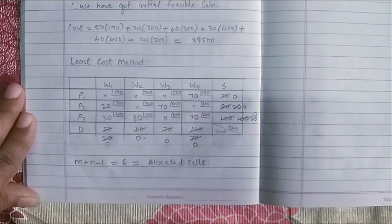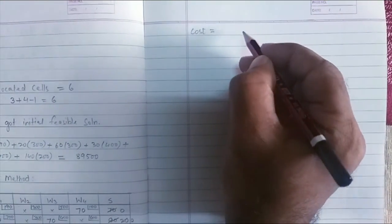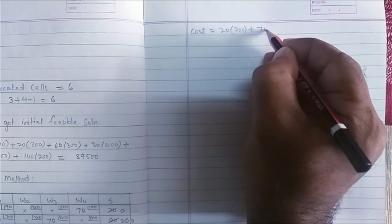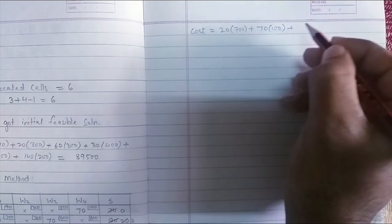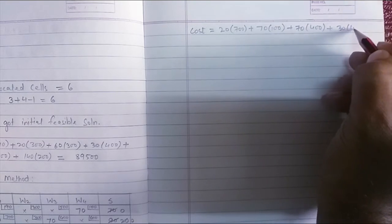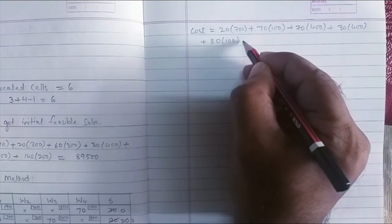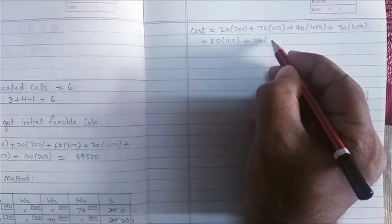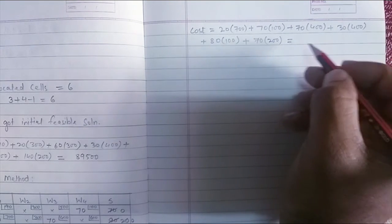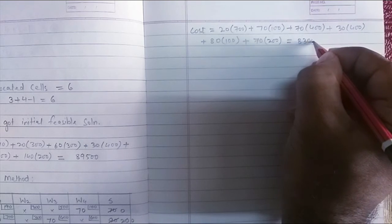Now, let us do the calculation and find the total cost. I'll just put the cost here. Your cost is equal to 20 multiplied by 700 plus 70 into 100 plus 70 into 400 plus 70 into 400 plus 30 into 400 plus 80 into 100 and the last one. I have written all the six values and after doing the multiplication and the addition the answer which I am getting is 83,000.